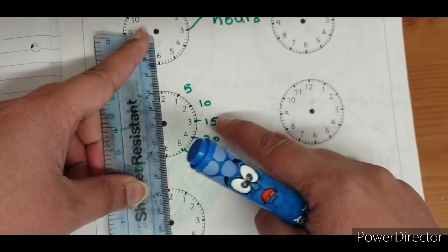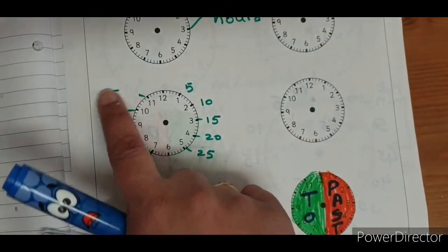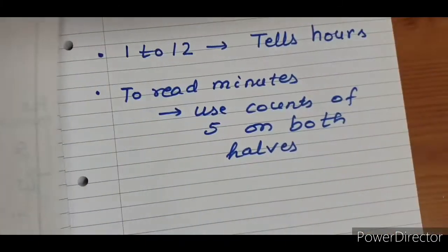we write down the counts in 5 on both sides. 5, 10, 15, 20, 25. And same way on the other side.